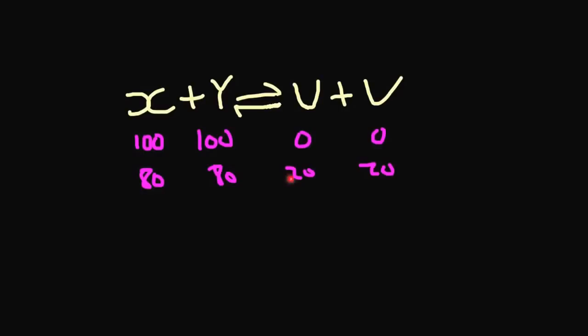However, I can get more of U and V if I change the conditions. So with reversible reactions, you can get more of what you want by changing the conditions. If you imagine the concentrations of X and Y and U and V being on a line — right here I've got 100% of X and Y, and right here I've got 100% of U and V — at the moment we've got 80 of X and Y and 20 of U and V. What I want to do is change the conditions so that the equilibrium is shifted to the right so that I end up with more products.